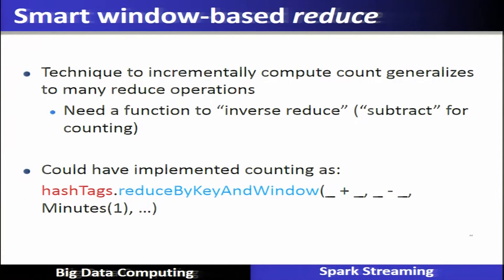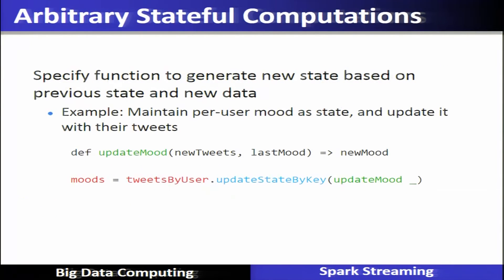Smart window-based reduction uses techniques to incrementally compute counts, generalizing to many reduce operations. This means using an inverse reduce function — that is, subtraction for counting. This can be implemented as reduceByKeyAndWindow, where after sliding, the new value is added and the old value is subtracted.